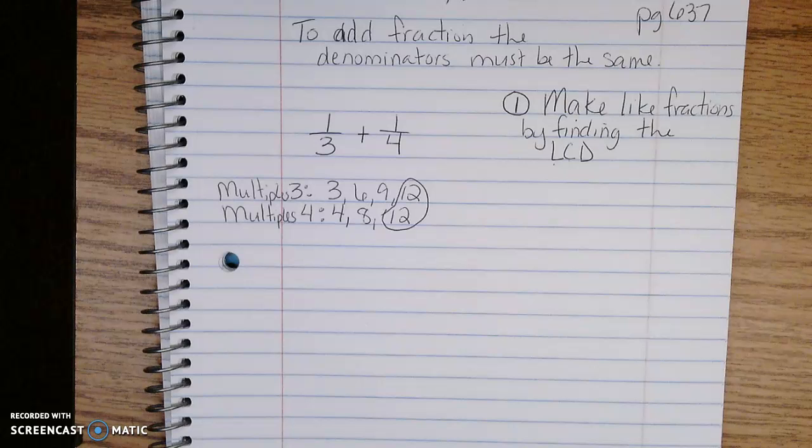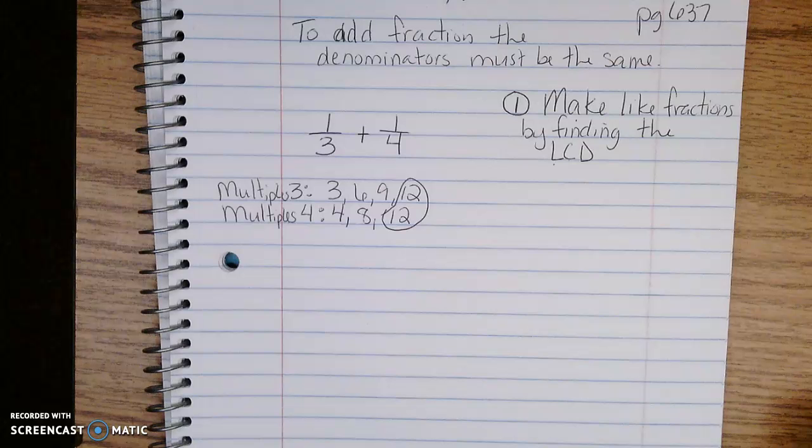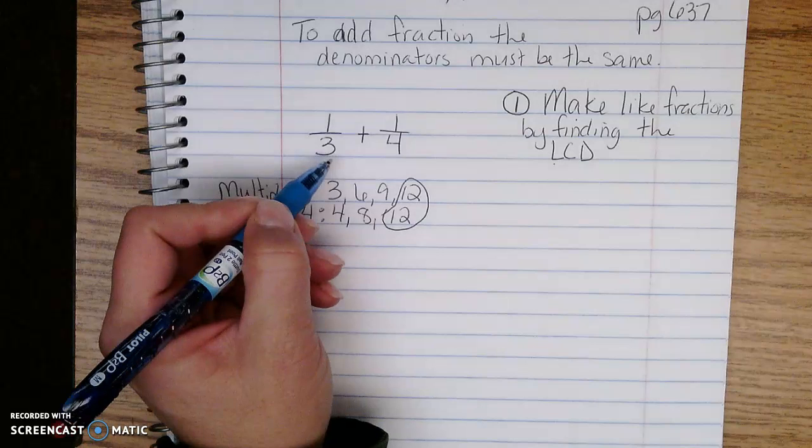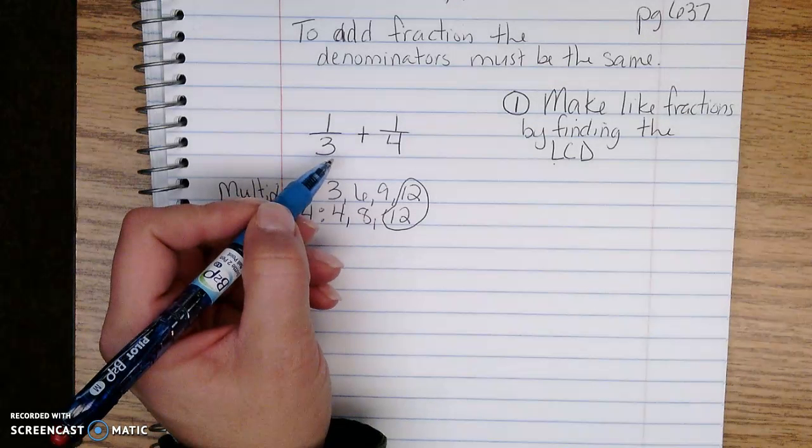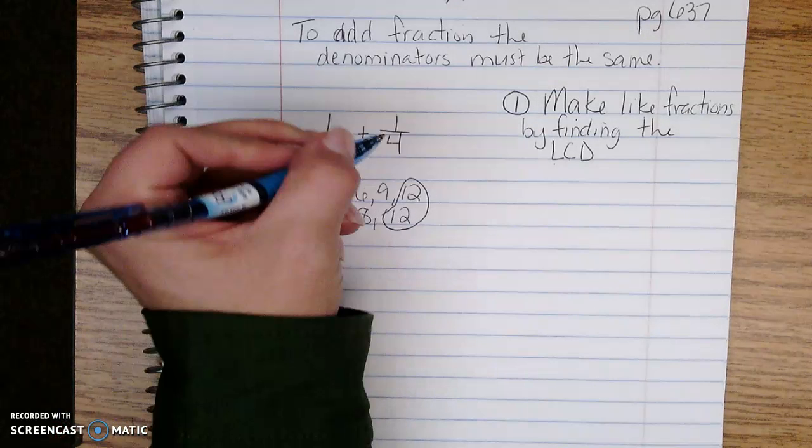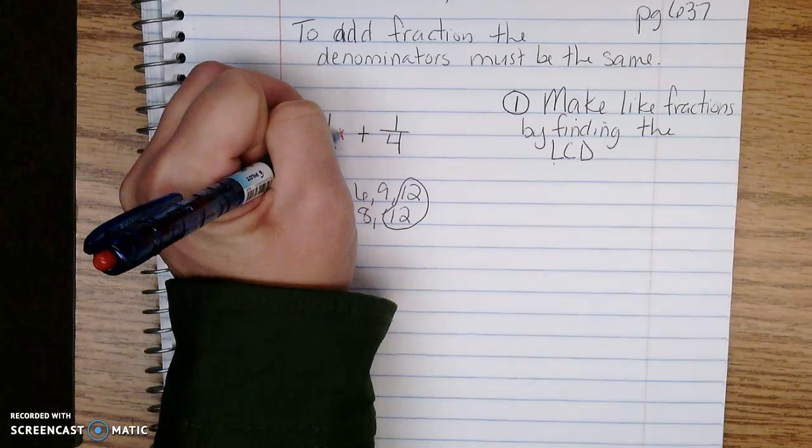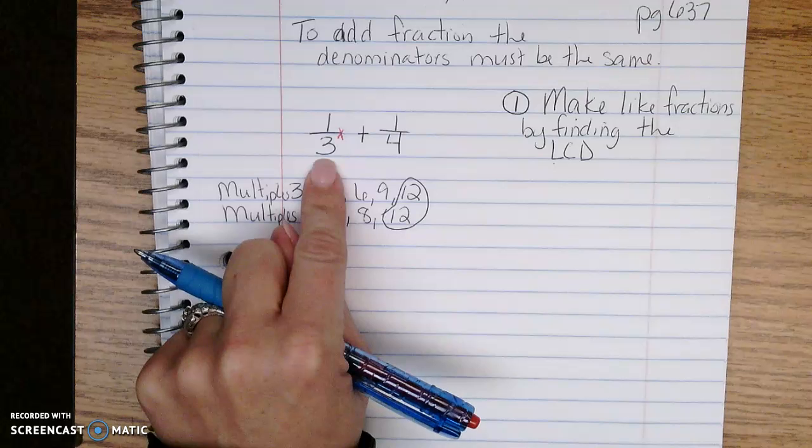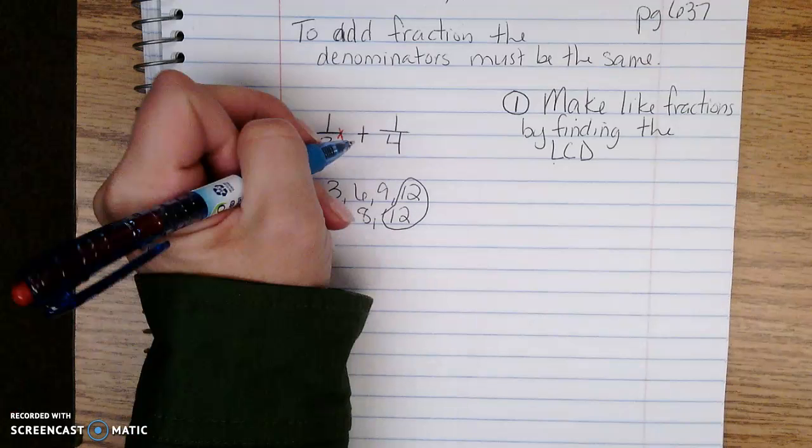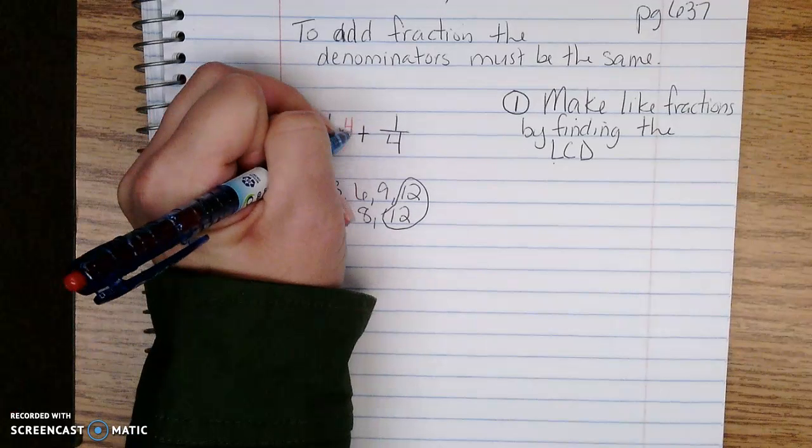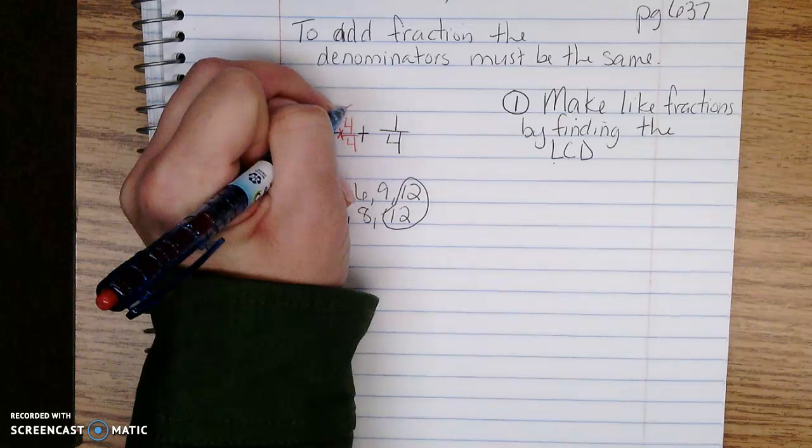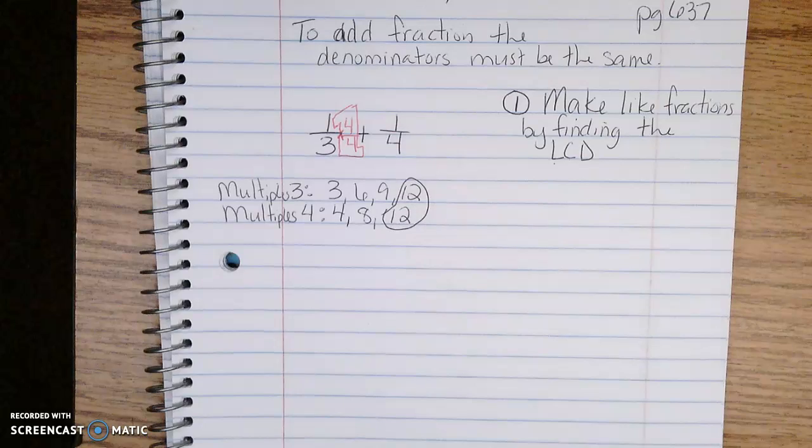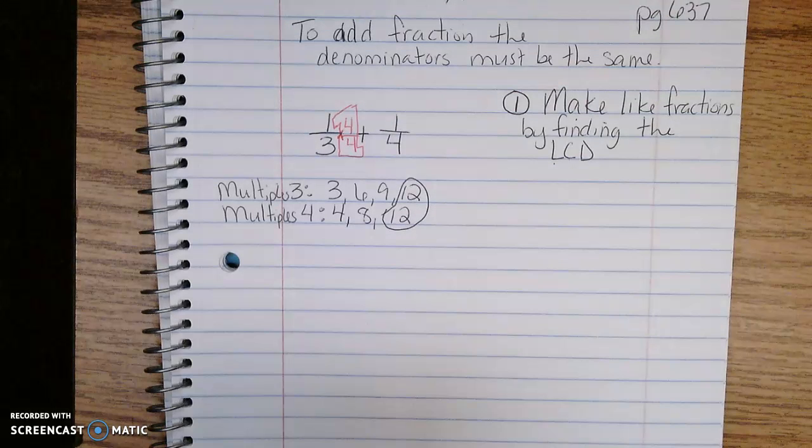How do I turn a 3 into a 12 using multiplication? I know that 3 times 4 is 12. I have to always multiply by a value of 1, right? 4 over 4.